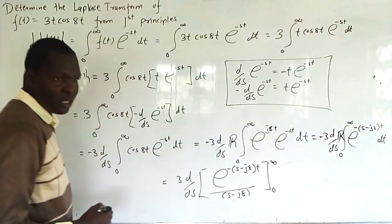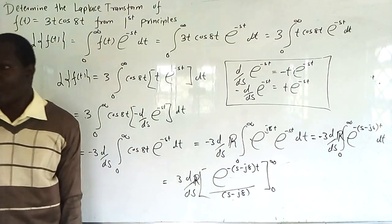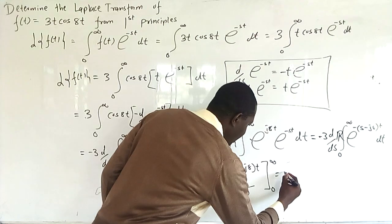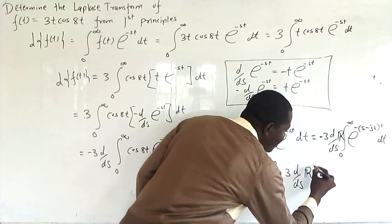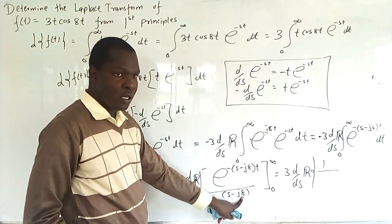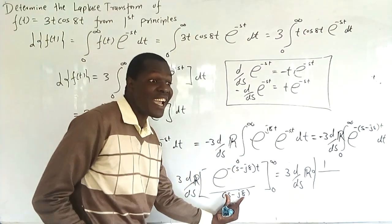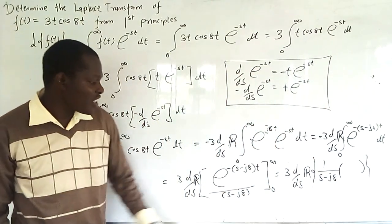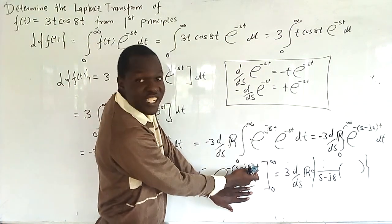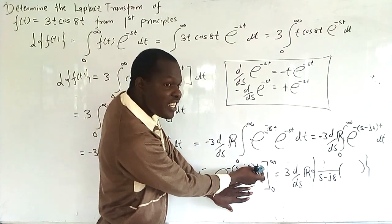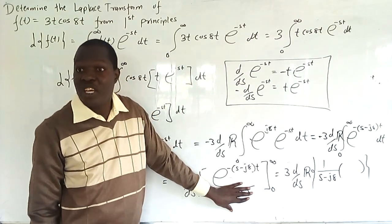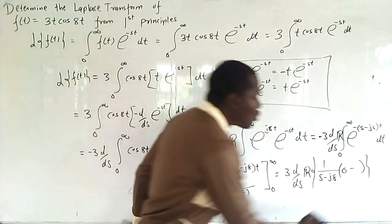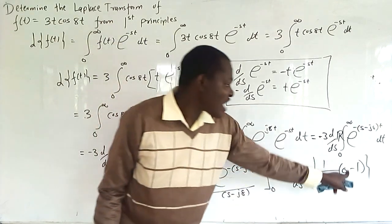We are only interested in the real part. Putting in the upper limit of infinity, it is like having e^(-∞) which equals 0. Putting in the lower limit of 0, e^0 = 1, since anything raised to power 0 is 1. So upper limit gives 0 and lower limit gives 1, meaning the result is 0 - 1 = -1.